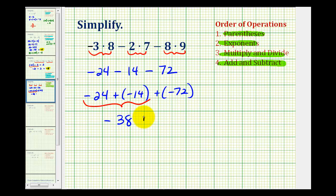So now we have negative 38 plus negative 72. And now we have another sum where the integers have the same sign. They're both negative. So again, we'll add their absolute values and keep the sum negative.